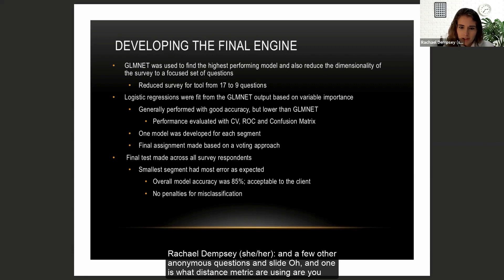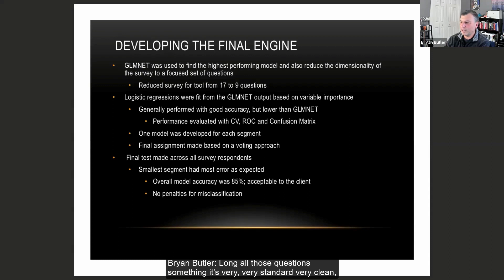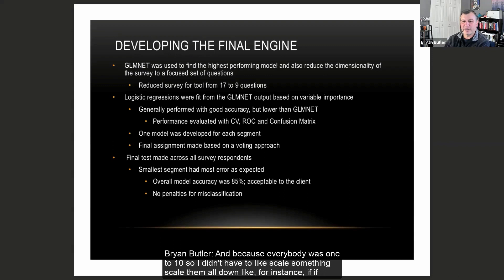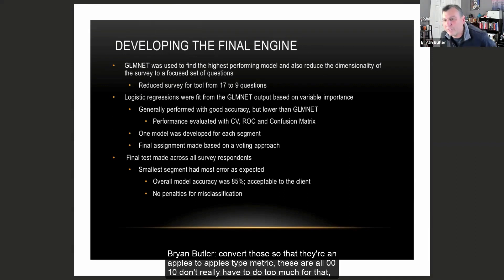On distance metric for hierarchical clustering: Euclidean distance. Think of a matrix where you have 10 columns and you calculate the squared distance along all those questions. It's very standard and clean. Because everybody was on a 1 to 10 scale I didn't have to scale anything. For example, with web data you've got bounce rate and page views — page views are in the thousands and bounce rate is a percentage, so you'd have to convert those to an apples-to-apples metric. But here everything is 0 to 10, so no conversion needed.